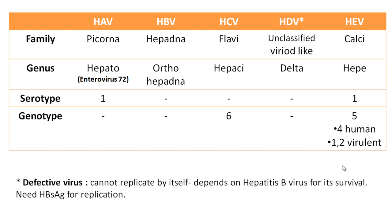HCV has six genotypes. HEV has five genotypes, out of which four are human genotypes and specifically genotypes one and two are more common. A quick comment on hepatitis D virus: it is also known as a defective or dependent virus, as it cannot replicate by itself and depends on hepatitis B for its survival and replication. It is devoid of envelope or surface antigens, so it uses the hepatitis B surface antigen for its replication.